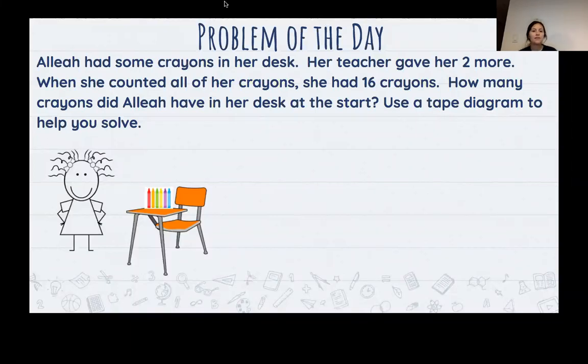All right. We should have all already paused it and read it again. So I'm just going to go ahead and underline some important things. The story is all about Aaliyah. So Aaliyah had some crayons. Do we know how many crayons she had at the beginning? No. They just said some. Let me put a question mark right there. She had some crayons on her desk. Her teacher gave her two more. Is she getting more crayons or is she losing crayons?